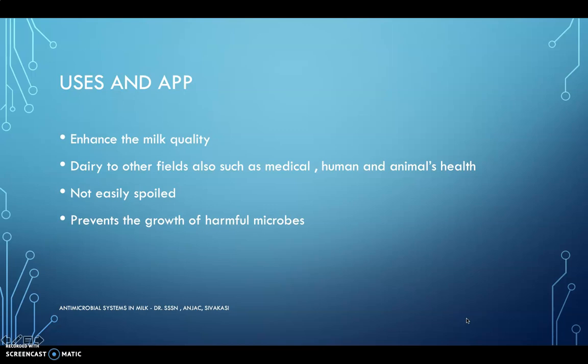These six proteins enhance milk quality. Because of these characteristics, milk is used not only in dairy but also in medical fields for human and animal health. These compounds prevent milk from spoiling easily and inhibit the growth of harmful microorganisms. Pathogenic microorganisms are completely inhibited. Milk also contains probiotics — useful microorganisms that are beneficial for our gut. Pathogenic microorganisms are killed or inhibited in their growth by means of these proteins.